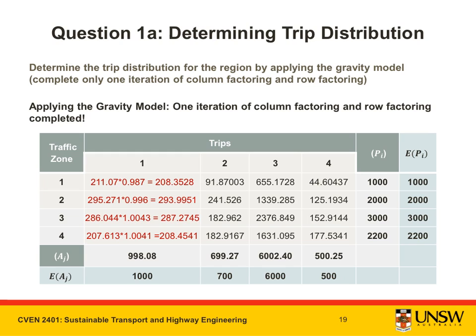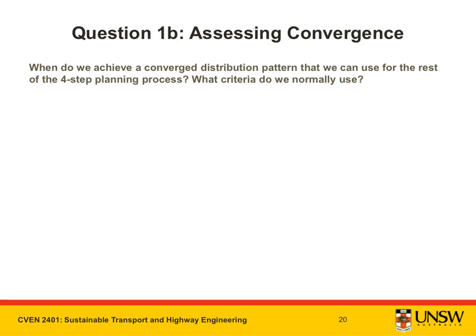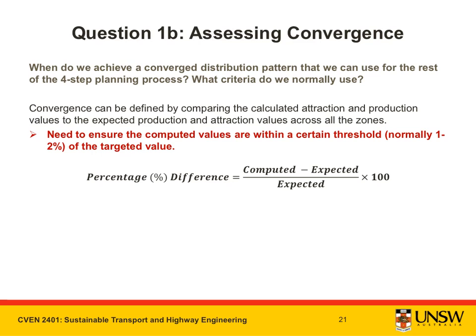At this point we have now done one iteration of column factoring and row factoring as per the question. Note that the conservation of productions is satisfied and the actual attraction figures are very close to the expected values. This brings us to part B: when do we achieve a converged distribution pattern for use in the rest of the four-step planning process? The process requires that we continue the iterative process of column and row factoring, comparing calculated attraction and production values until they are sufficiently close to expected values across all zones — normally within a threshold of one to two percent of the targeted value. The formula to calculate percentage difference is shown on this slide.